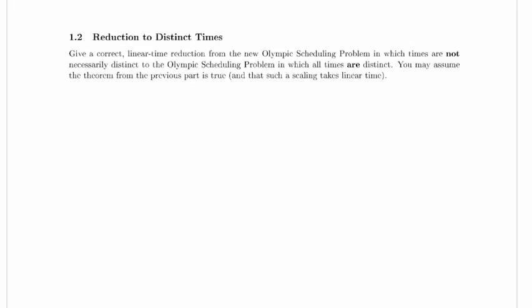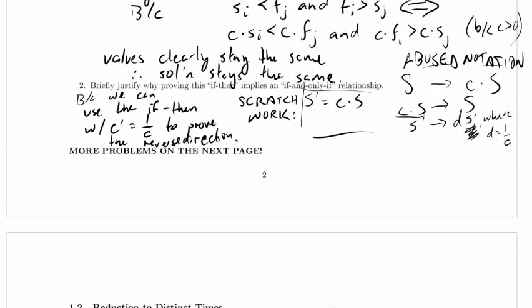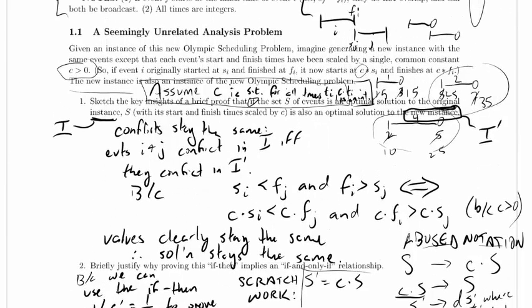You may assume the theorem from the previous part is true and that such a scaling takes linear time. So if this were an exam and we hadn't solved the previous part, that's okay. We get to just assume that the stuff in the previous section is true and that our scaling takes linear time. Alright, so let's just imagine that we've got, actually I'm gonna go back up and just remind myself of what that little instance looked like. So this little instance over here, it's kind of handy, it's got overlapping times.